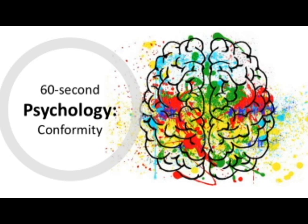Conformity is a change of behaviour to match a group due to social influence. There are two types of social influence: normative social influence and informational social influence. These are essentially the two reasons that someone would conform to the behaviour of a group.